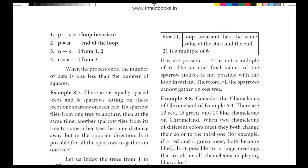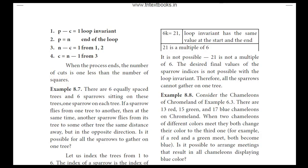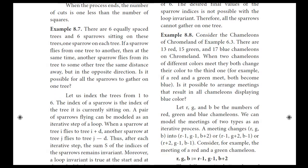Therefore, when the process ends, the number of cuts C is 1 less than the number of squares N. That is, C = N - 1. This concludes Example 8.6.